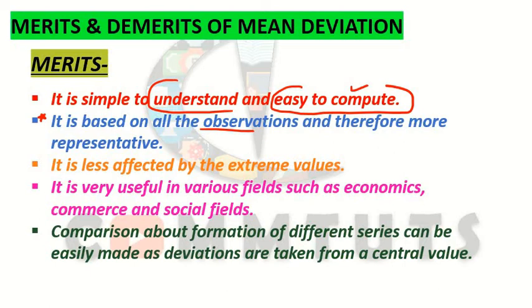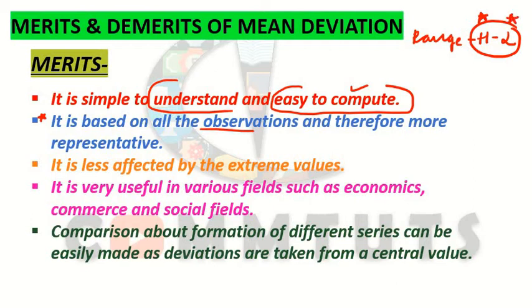Now if we compare this with range and quartile deviation — range is a method in which not all values of your data are included. The formula for range is highest value minus lowest value. So whatever values are in between, we exclude them. This is why range is not based on all observations, and therefore it is less representative.